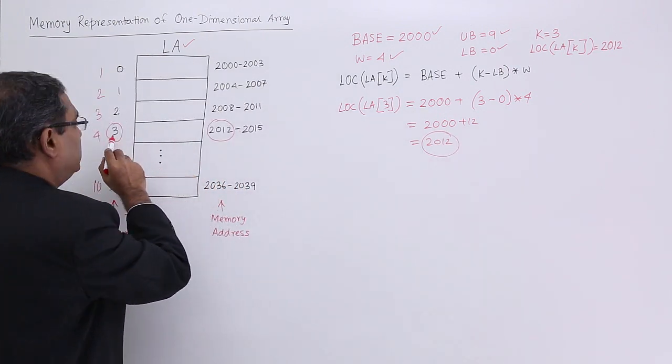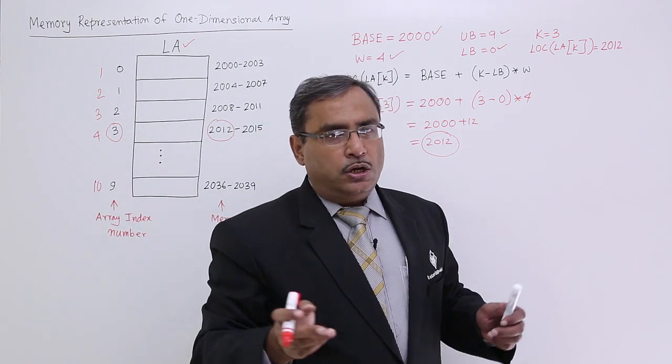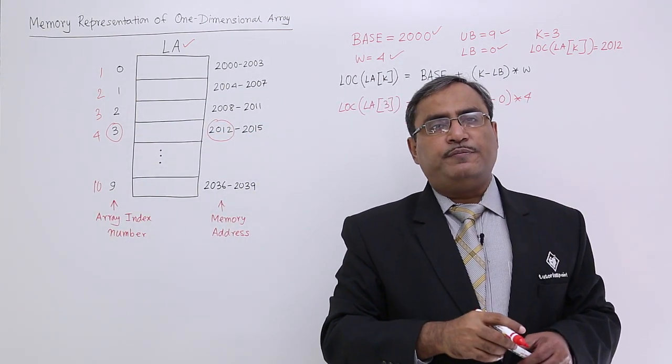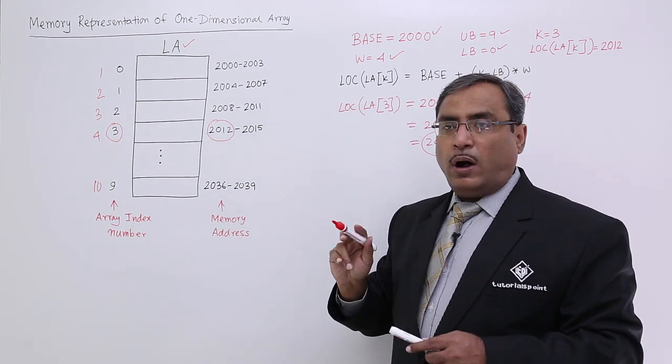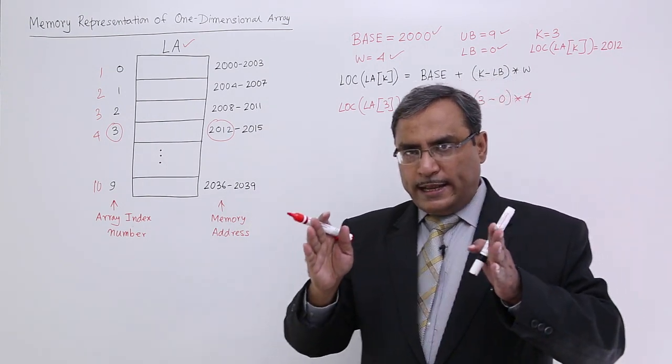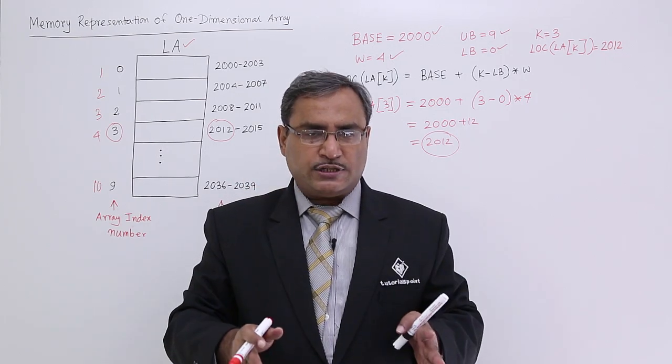And obviously, for this location number 3 or index 3, the starting address is 2012, and obviously it will get ended by 2015. In this way, the memory representation of one dimensional array we have discussed. One array will have its allocation in the computer's memory in a linear fashion.